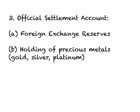The third sub-account of BOP is called the official settlement account, which you can consider the government account. It is made up of two components: foreign exchange reserves and holdings of precious metals. Different governments around the world hold currencies of other countries, and this total accumulated value is called foreign exchange reserves. Every government also holds precious metals, which could be gold, silver, or platinum.